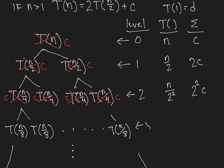At level 3, we're representing t of n over 2 cubed, and there are 2 cubed nodes, each of value c.